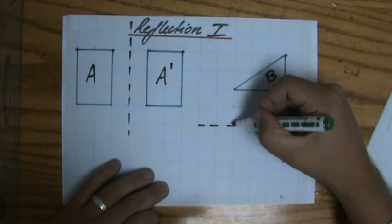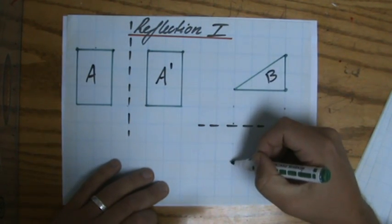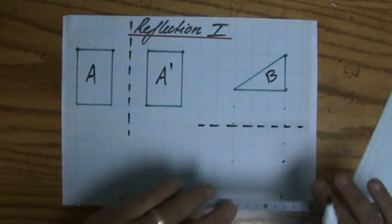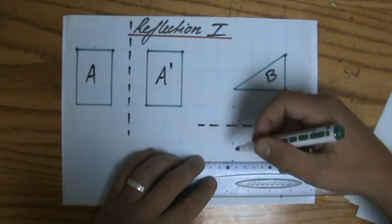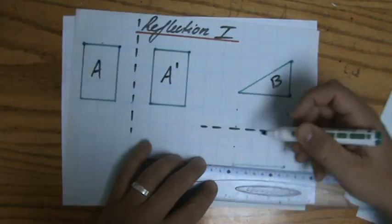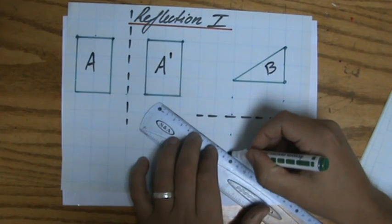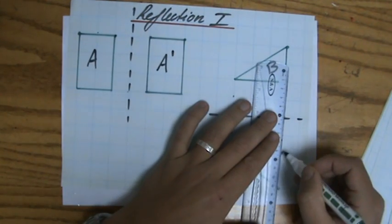And that point, one, two. So one, two over there. Okay, so I have my three vertices. I reflected them in the mirror line. And as you can see, it flipped.